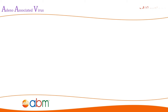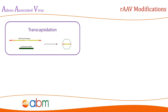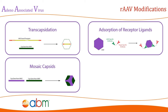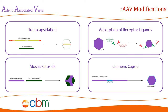Other changes have been performed by scientists to recombinant AAV vectors to make them more effective, such as capsid modifications to change tropism towards certain tissue types. These modifications include: transcapsidation — the process of packaging the ITR of one serotype of AAV into the capsid of another serotype; adsorption of receptor ligands — the addition of foreign peptides to the surface of the recombinant AAV capsid; mosaic capsid — packaging the AAV genome into a capsid made up of a mixture of unmodified capsid proteins from two separate serotypes; and chimeric capsids — packaged capsids that have had a foreign protein sequence inserted into the open reading frame of the capsid gene.